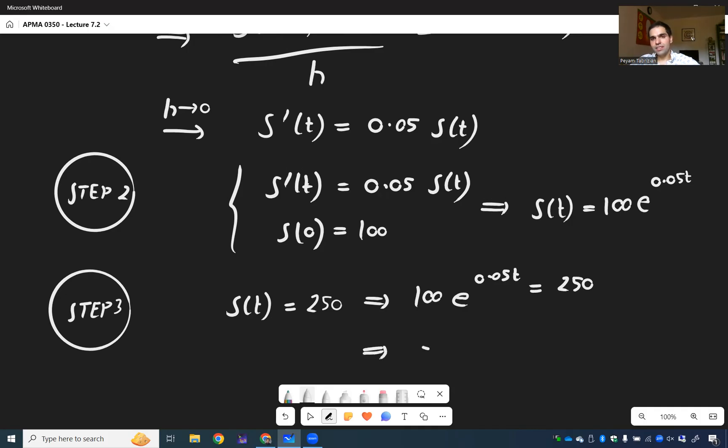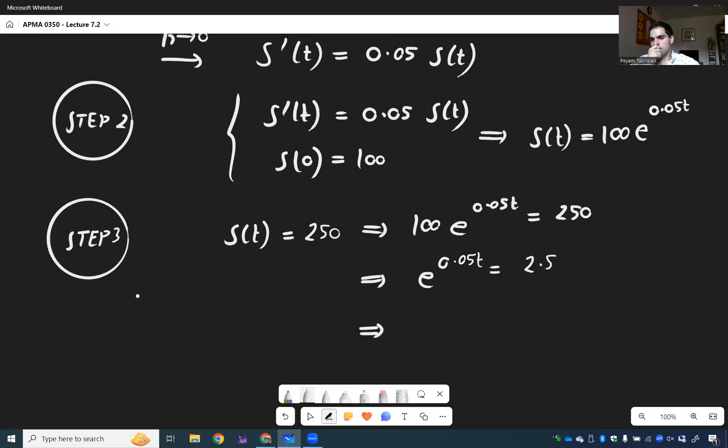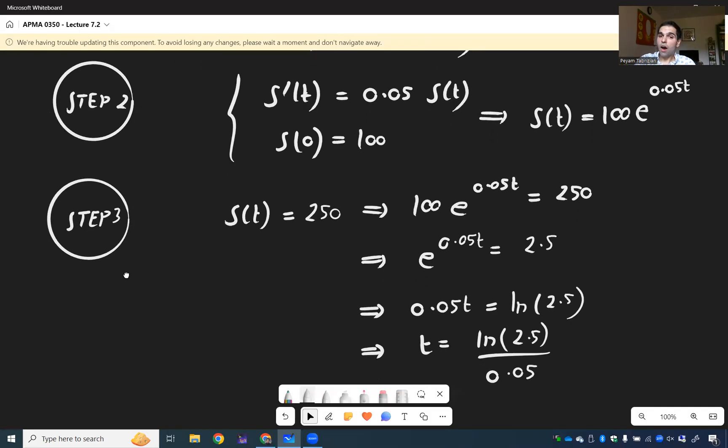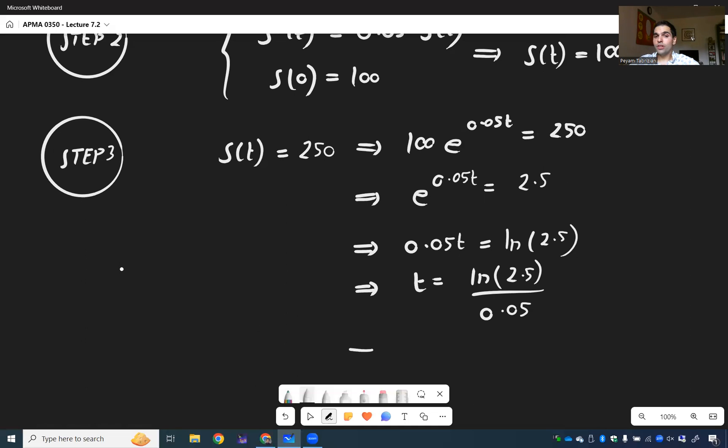I'll just do it once and never again. e^(0.05t) is basically 2.5. And then take ln. So, 0.05t is ln(2.5). And then t is ln(2.5) over 0.05. And the question is, how long will it take for your savings to reach $250? It will take roughly 18.3 years.